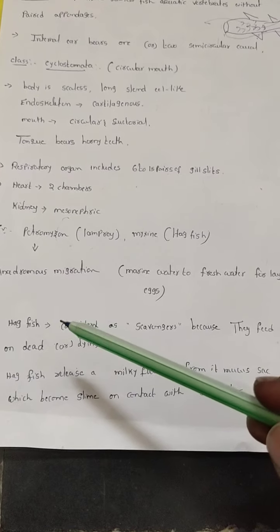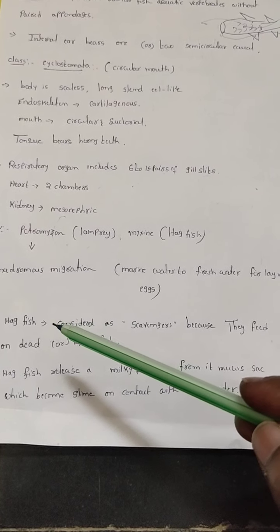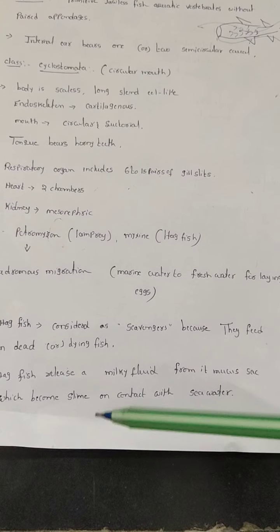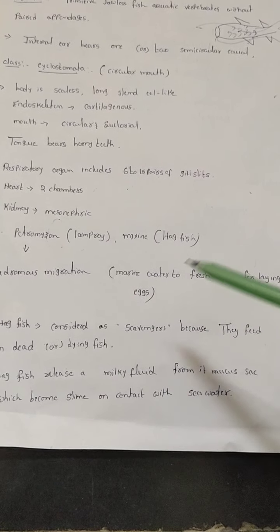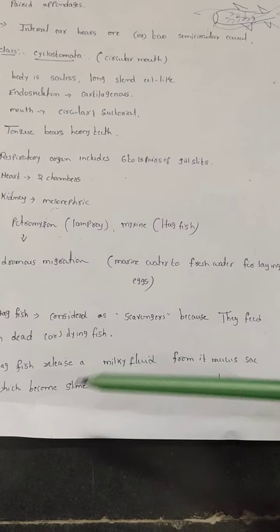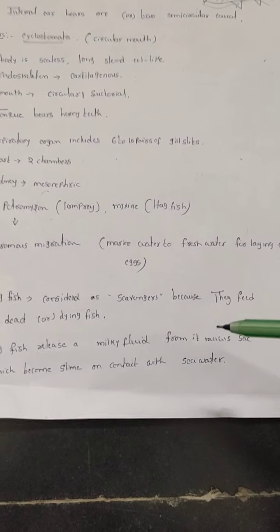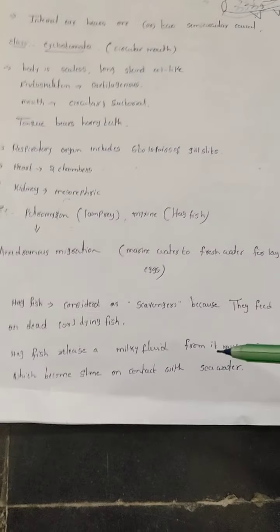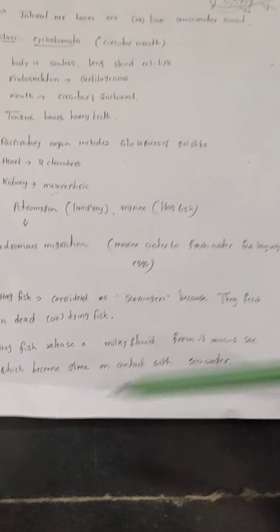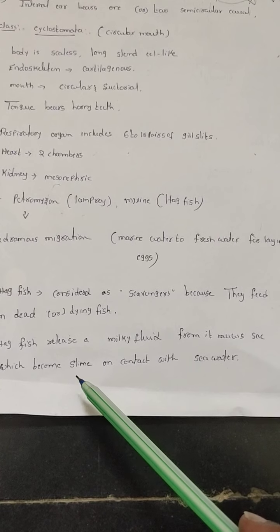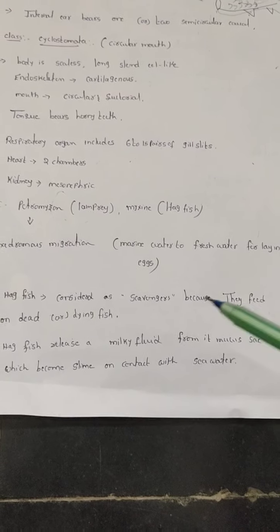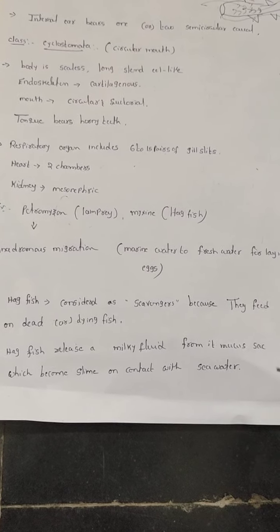Hagfish secretes a milky fluid, and when it contacts sea water this fluid turns into a slime. This slime is mainly used for attachment purposes.